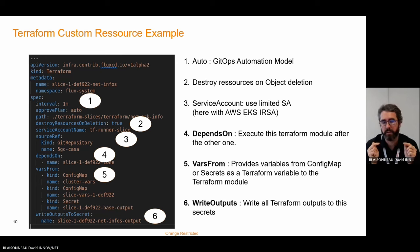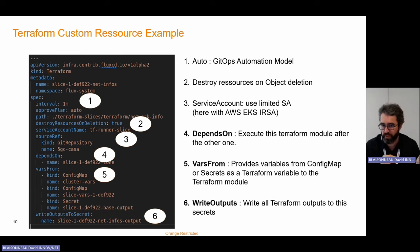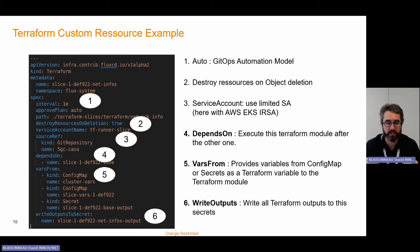The last element is that the script is not only deploying infrastructure — it also has to share what has been created: the ID of the resources created or specific network configuration. So we have to write the outputs of those Terraform templates to secrets, to be shared with other Terraform or kustomization resources.